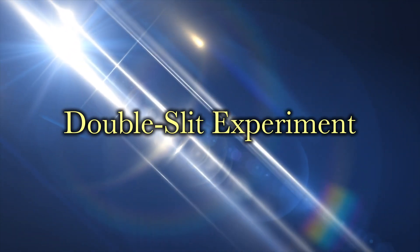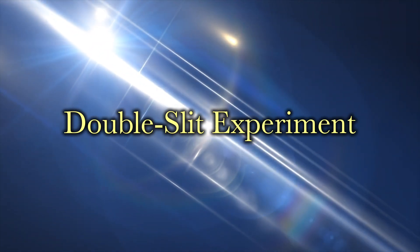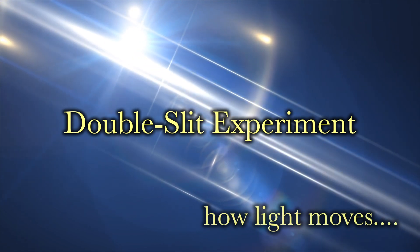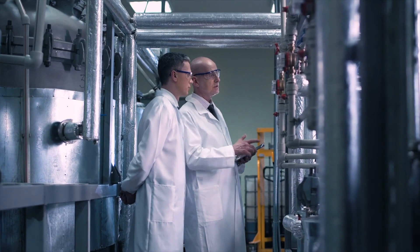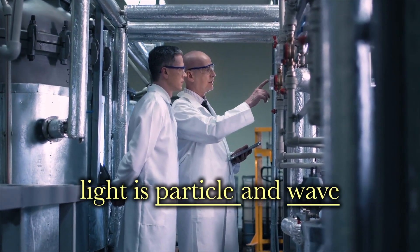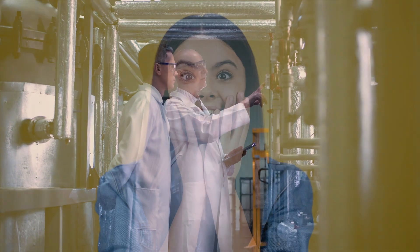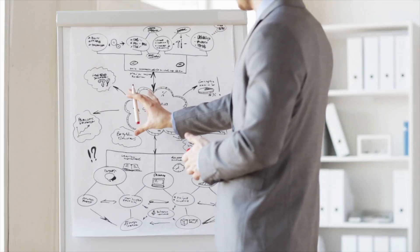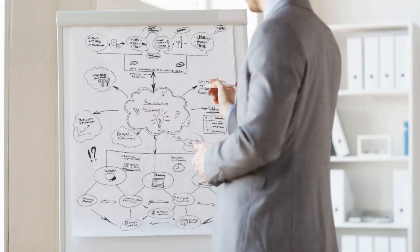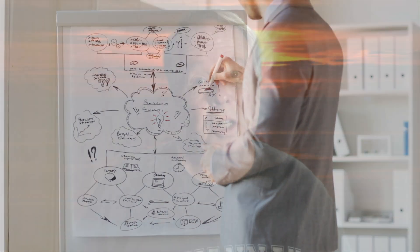The double-slit experiment provides important information about the motion of light in the universe. The majority of scientists think that it demonstrates that light is simultaneously a particle and a wave. That being said, there are alternative explanations for what is occurring in the experiment. Here I will discuss two previously proposed explanations. In addition, I'll give you my explanation, which is probably going to be among the strangest things you've ever heard.